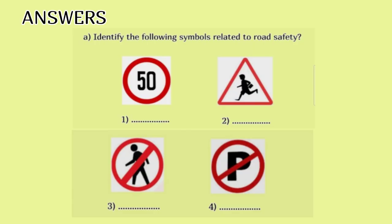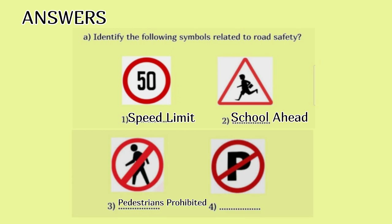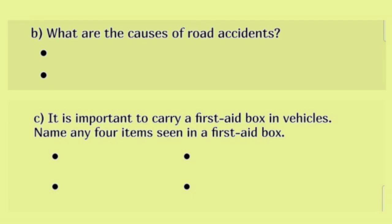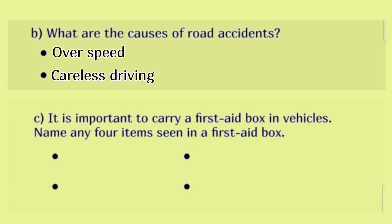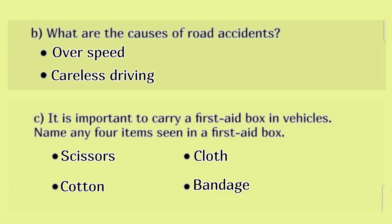Answers. A. Identify the following symbols related to road safety: 1. Speed limit, 2. School ahead, 3. Pedestrians prohibited, 4. No parking. B. Causes of road accidents: overspeeding, careless driving. C. Four items in a first aid box: scissors, cloth, cotton, bandage.